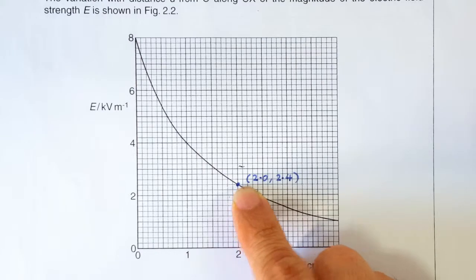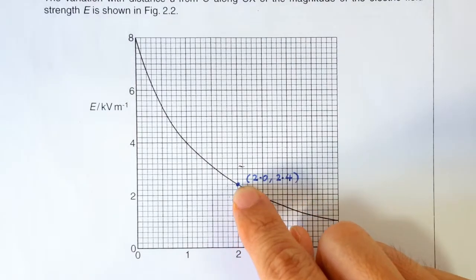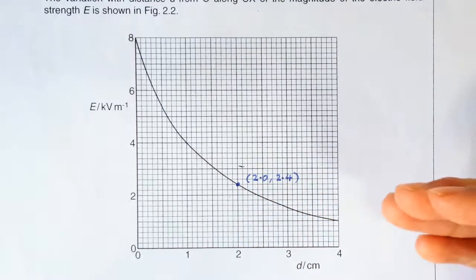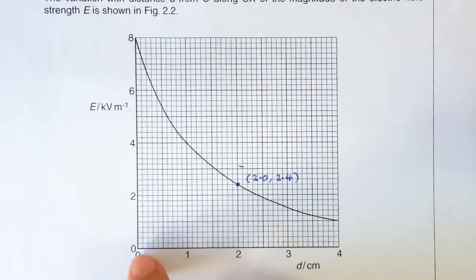So for our calculation to be accurate, this single value that we chose better correspond to the average value of the field strength between point C and point X.